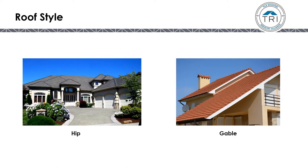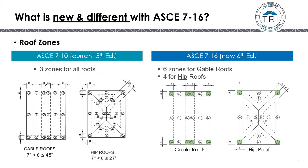The big difference between the old manual and the new 6th edition FRSA TRI High Wind Manual is different types of roof styles. The old manual had one style roof. The new manual separates the tables into hip roofs and gable roofs. Also, in ASCE 7-16 there were three zones for all roofs, but in the new 6th edition there are six different zones for gable roofs and four different zones for hip roofs.